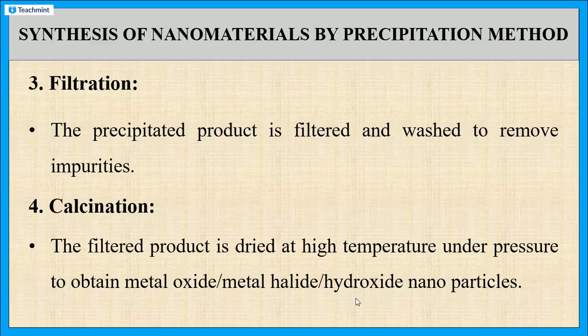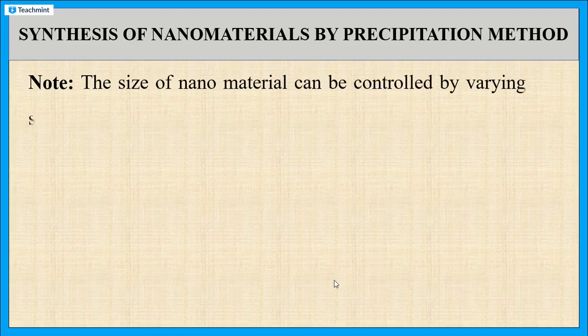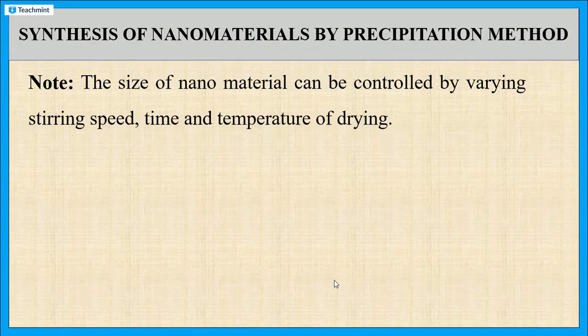These are the main four steps for the synthesis of nanomaterials by using the precipitation method. In this method, the size of the nanomaterials can be controlled by varying stirring speed, time and temperature of drying. If the saturation occurs for a longer period, then the precipitation with larger sized particles are formed. On the other hand, if the saturation occurs for a shorter period, then the precipitation with smaller sized particles can be obtained.